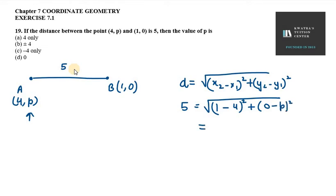So how much is 1 minus 4? Minus 3 whole square plus minus P whole square. So P whole square under root equals 5. Now under root goes to the other side, so it will be 5 square equals 9 plus P whole square. So 25 minus 9 equals P whole square. 25 minus 9 is 16.